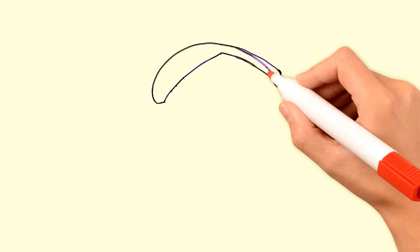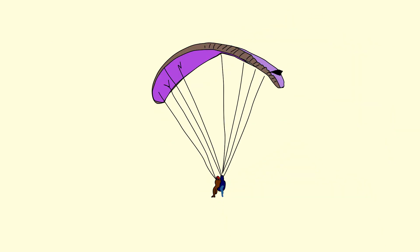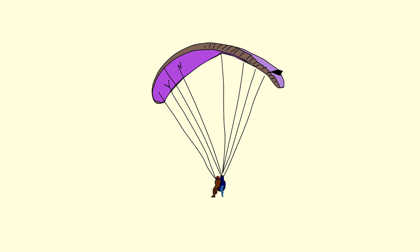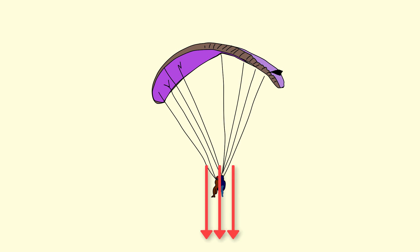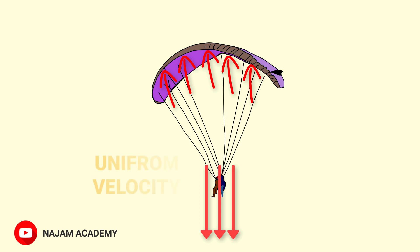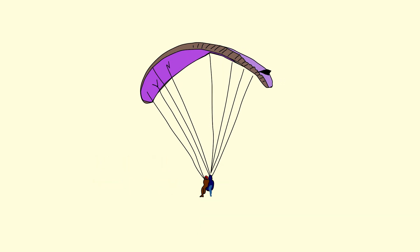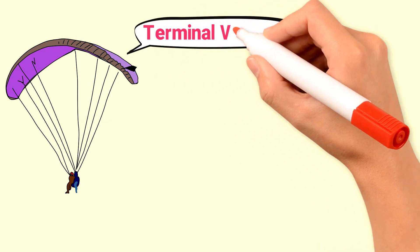When this paratrooper opens the parachute, something interesting happens. The parachute increases the surface area for the paratrooper. Thus, the air resistance on the paratrooper increases as the paratrooper falls towards the earth. A time comes when the downward force of the earth and the upward force of air resistance become equal. As a result, the paratrooper starts falling with uniform velocity towards the earth and executes the journey safely. This uniform velocity of the paratrooper is also known as terminal velocity.